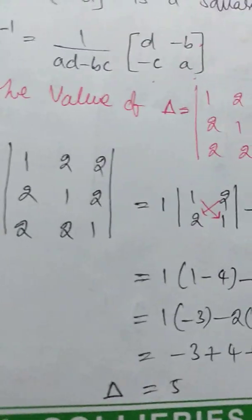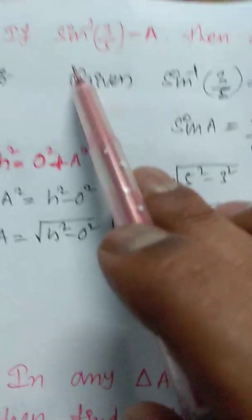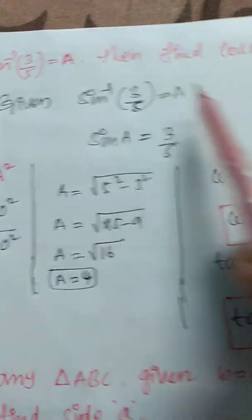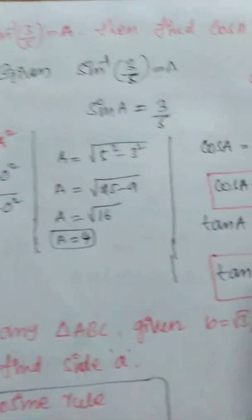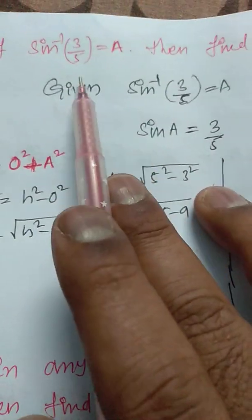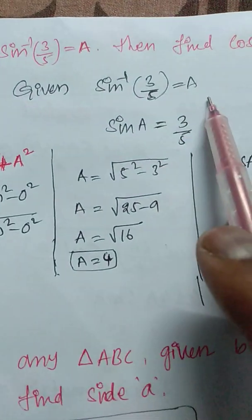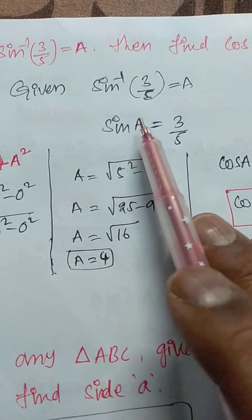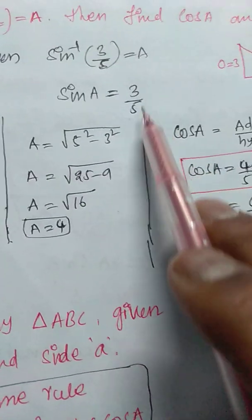This is the determinant of a square matrix of order 3 by 3. Next, problem four: if sine inverse of 3 by 5 is equal to A, find the values of cos A and tan A. Given: sine inverse of 3/5 equals A, so we can write sine A equals 3/5.